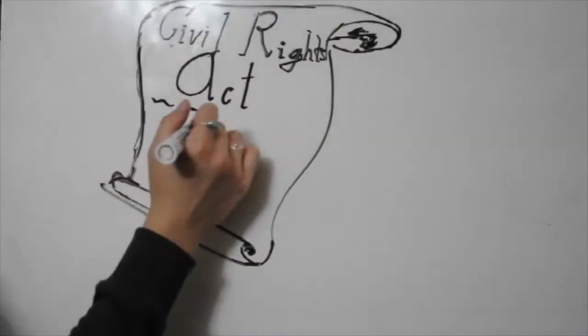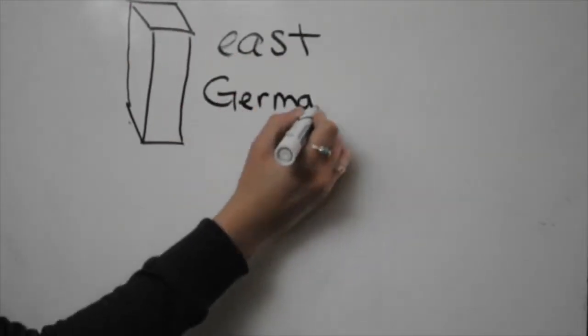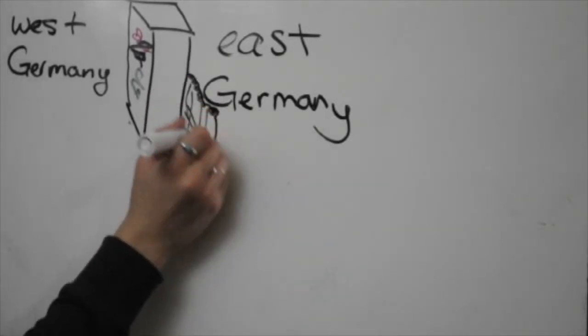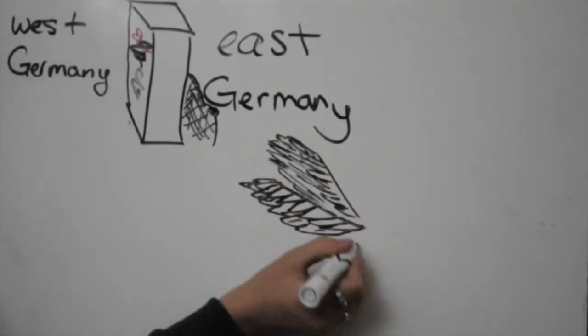King strongly believed that anything could be accomplished through peace, and relied heavily on the teachings of Gandhi. His non-violence rhetoric extended to the Cold War, and in 1964, Dr. King was invited by the mayor of West Berlin to speak at a festival there.